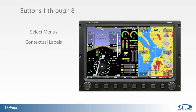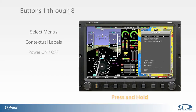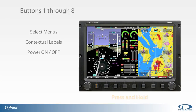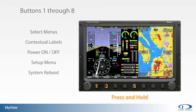In addition to the contextual function displayed at any given time, several buttons have assigned functions performed when pressed and held. The system will power on or off through the press and hold of button one. Holding buttons seven and eight will enter the system's configuration menu. To perform a system reboot, the user can hold buttons one, two, and five.